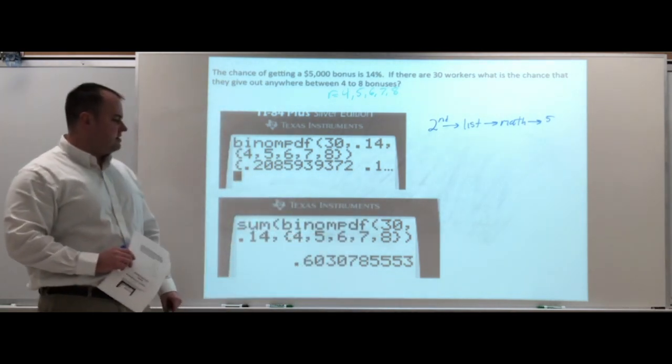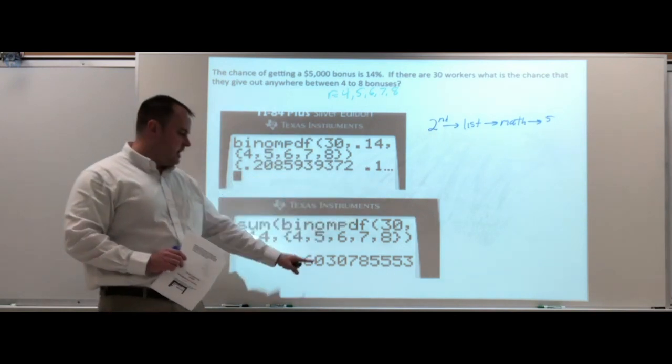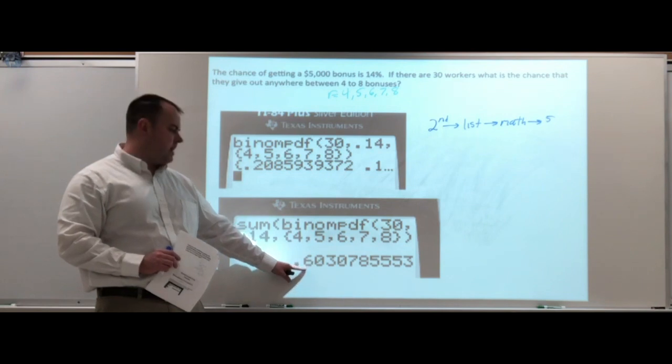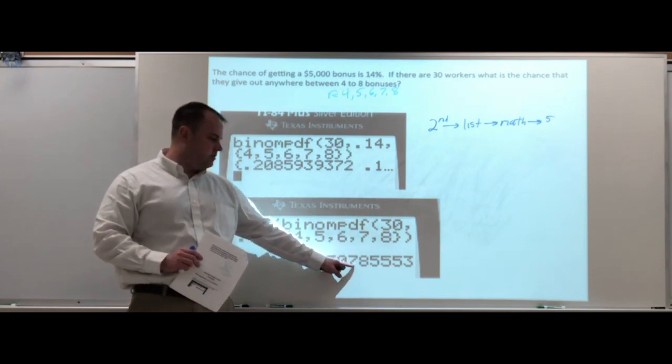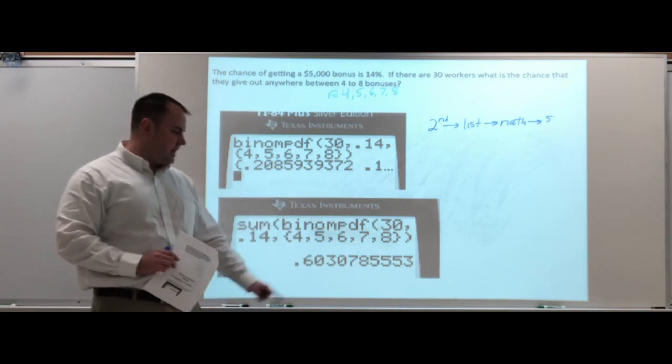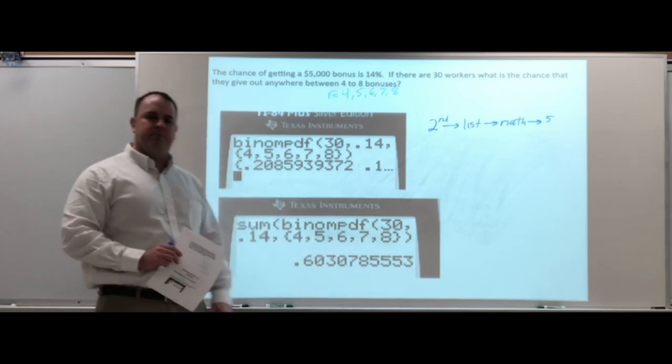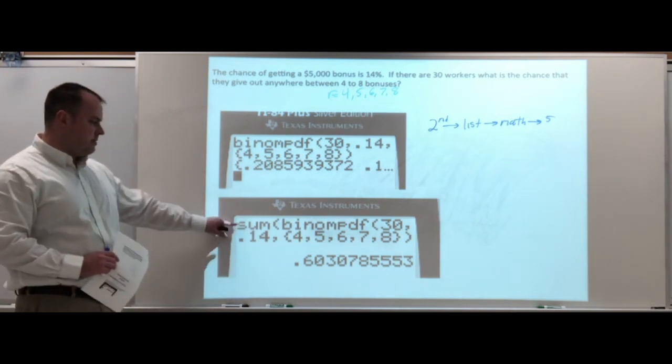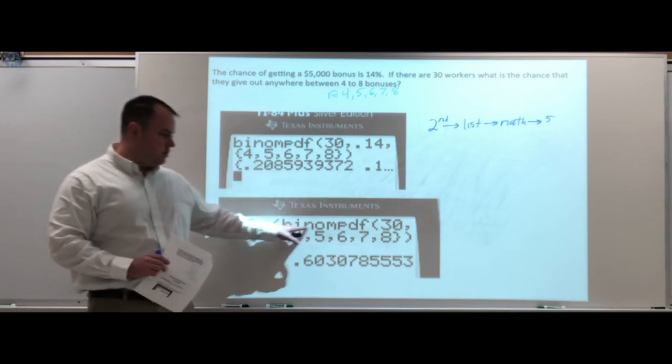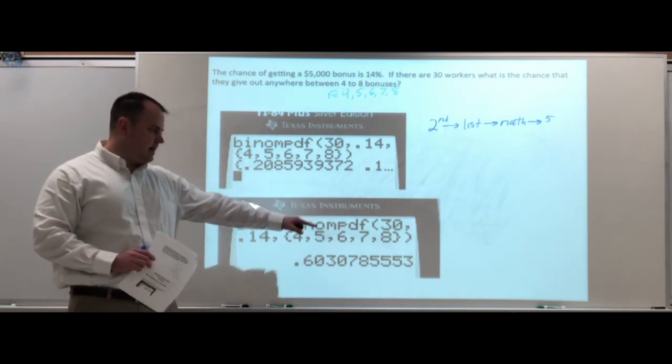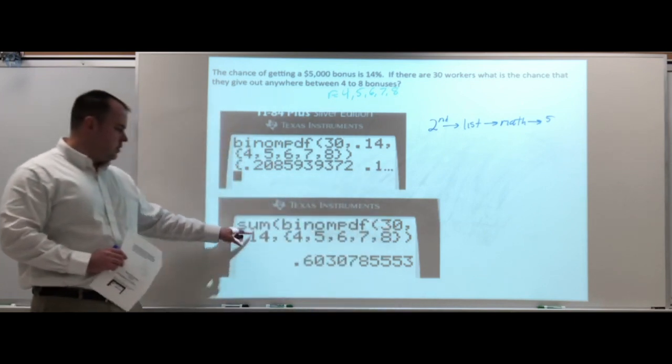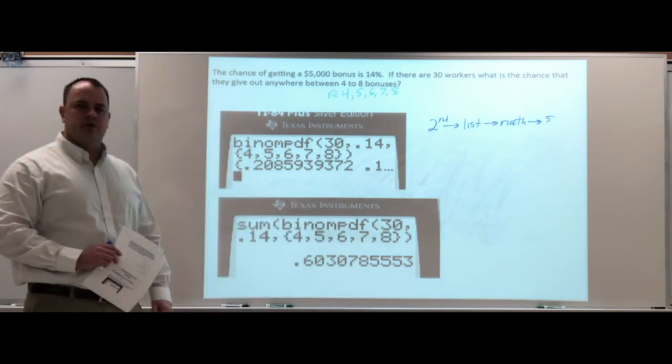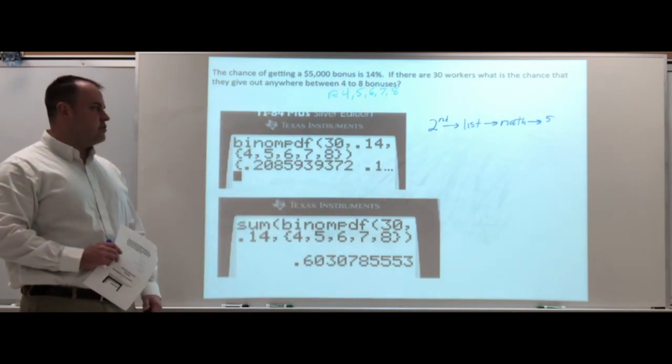Before you do binomial pdf, first go to the sum, and it would look like this: sum(binompdf(...)), and then everything else gets plugged in just like we did in the top one. You can see the difference here—it gives you a list of answers. The sum adds all of them up to give you one single answer: 0.60307855. Just turn that into a percentage: 60.308 percent. Look where the sum is—the sum is the first thing you put in, then you do the binomial pdf, your n, your p, brackets (not a parenthesis), and then you plug in all the numbers.